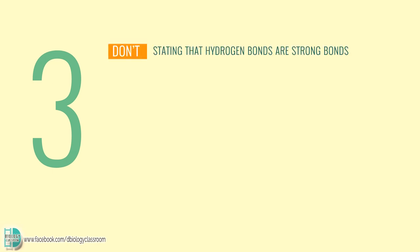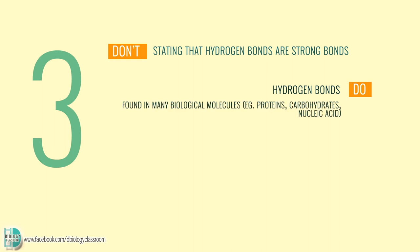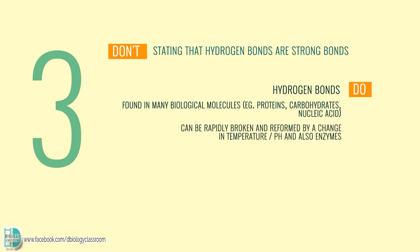Number 3: stating that hydrogen bonds are strong bonds. Hydrogen bonds can be found in many biological molecules such as proteins, carbohydrates and nucleic acid. Due to the fact that they can be rapidly broken and reformed by a change in temperature, pH, and also enzymes, we consider them a weak bond in biology.